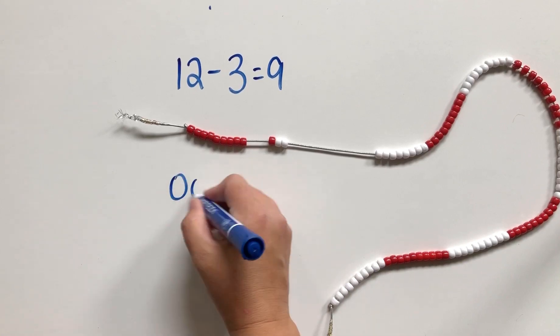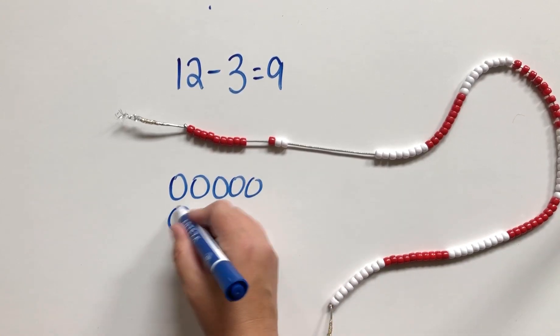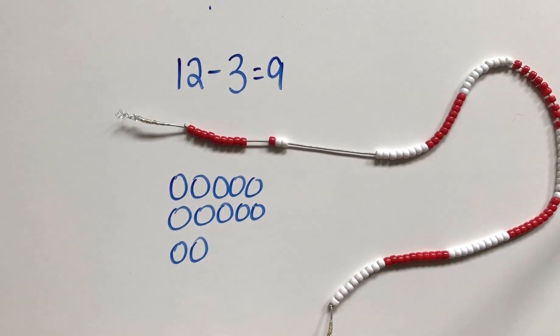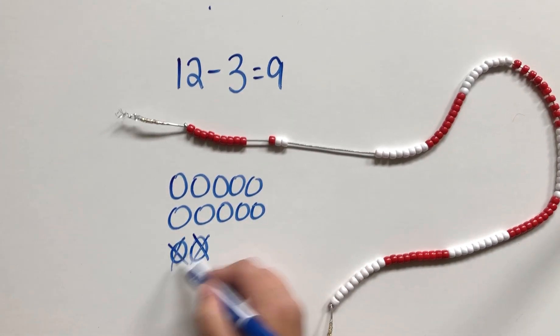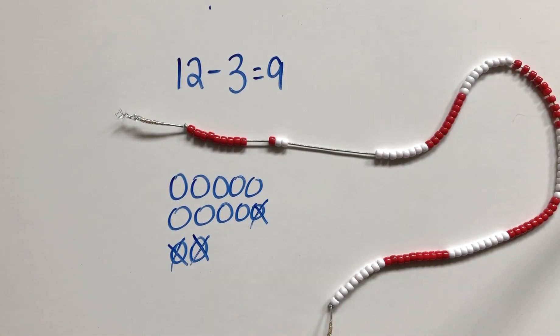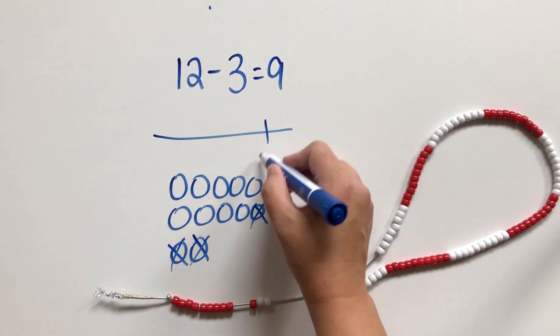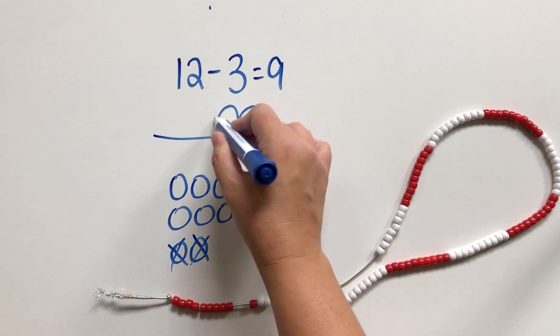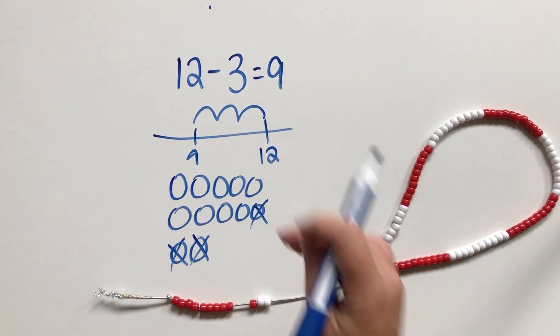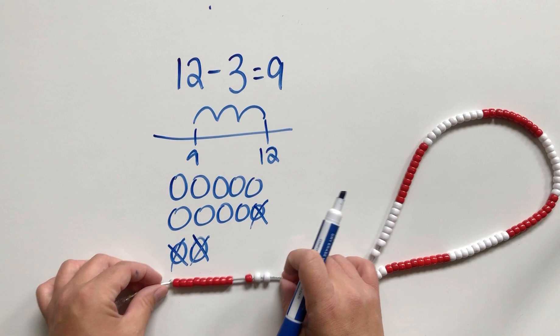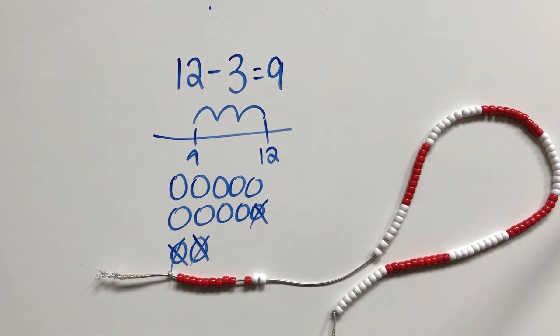We could draw 12 of something and then simply show that we're taking away three. We could also use a number line, and we're going to do three jumps back. That is actually a really good representation of the beaded number line as well. So there's lots of choice here.